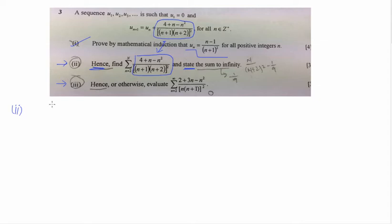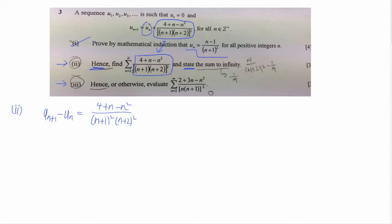Based on what we know from the first line, if we take u_(n+1) minus u_n, that gives us (4 + n − n²) / ((n+1)² · (n+2)²). This square can be multiplied in so both brackets are squared — I simply moved a term to the left and ended up with this. Noticing this structure, you should be sensitive to the fact that this hints at a method of differences.